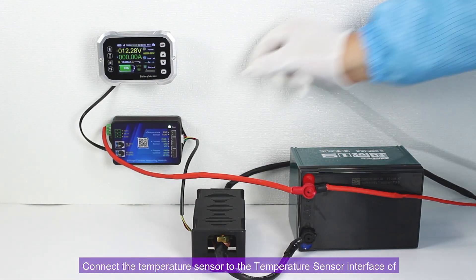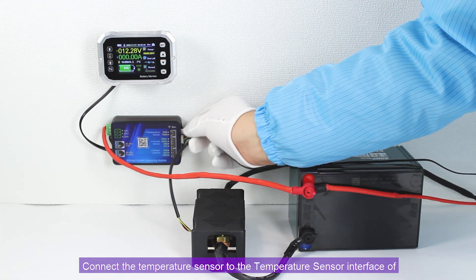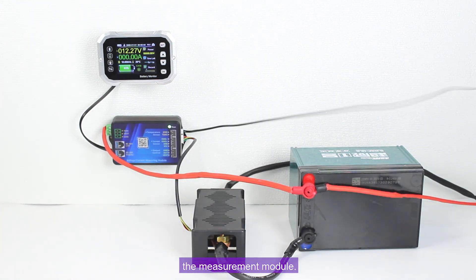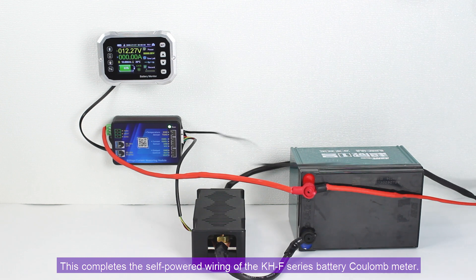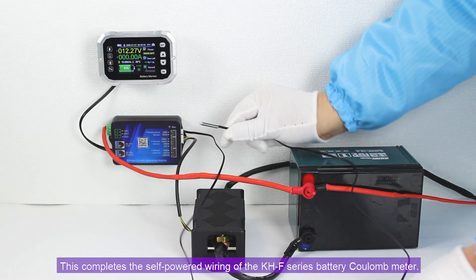Connect the temperature sensor to the temperature sensor interface of the measurement module. This completes the self-powered wiring of the KHF series battery kilometer.